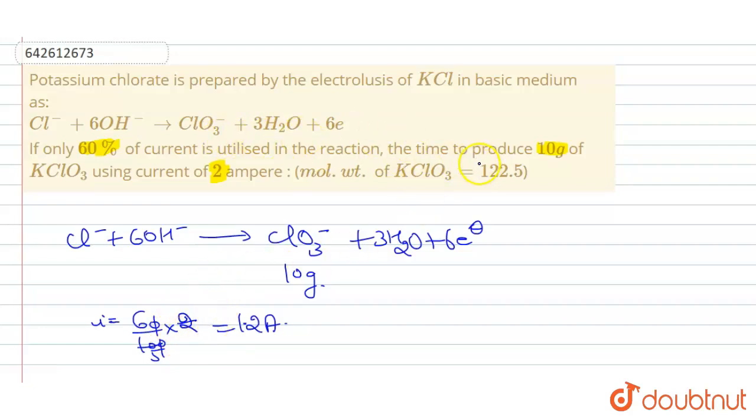Now what we have to find: we have to find out the time, time required to produce 10 gram of KClO3.